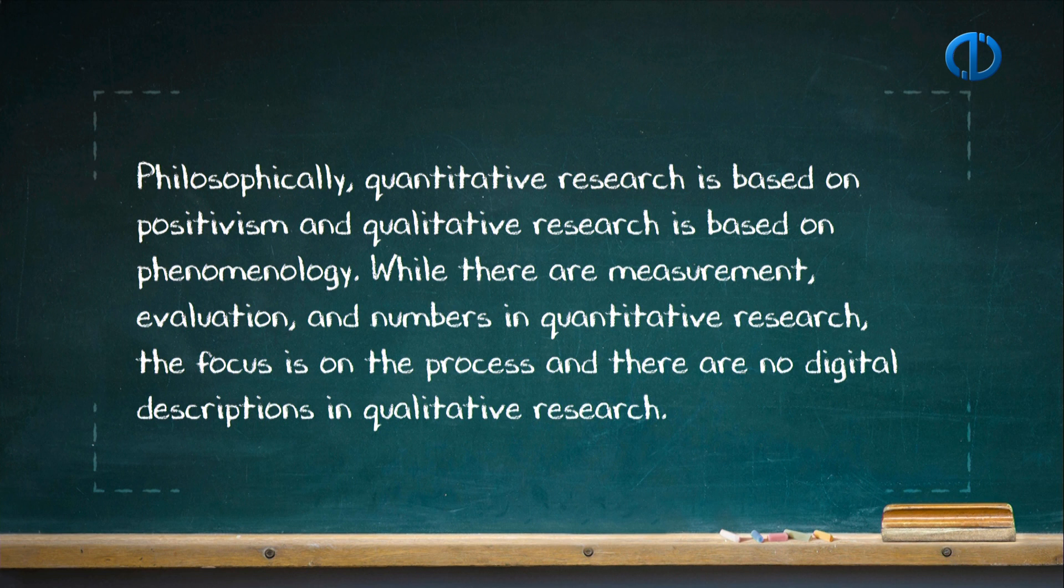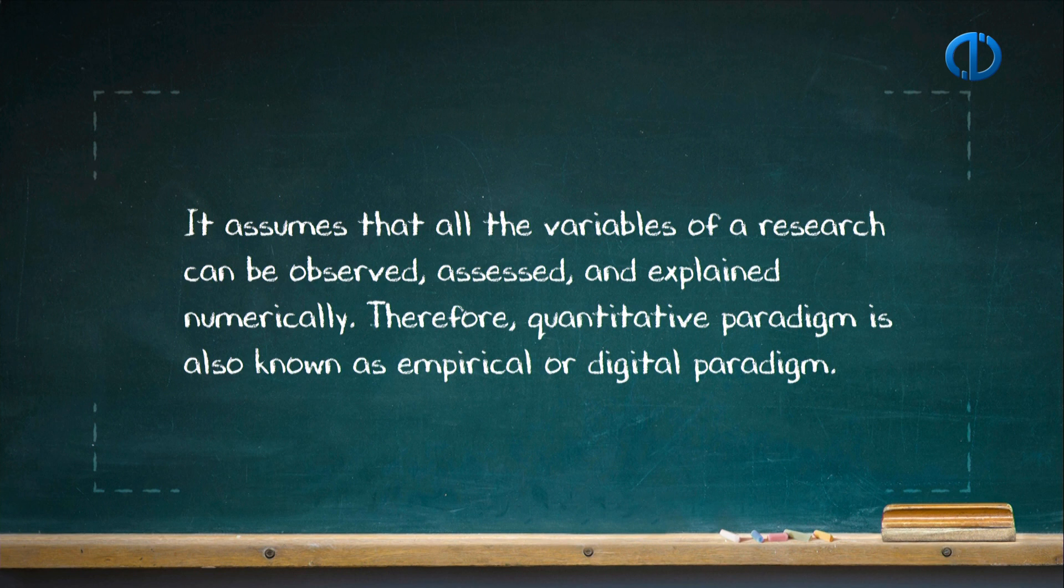Quantity is a notion used to specify the amount or number of something. In other words, the answer to the question how many or how much generally gives the quantity of that thing. Yet, quality involves the answer to how. In this sense, quantitative paradigm is based on numbers and statistical analysis in social sciences. It assumes that all the variables of research can be observed, assessed and explained numerically. Therefore, quantitative paradigm is also known as empirical or digital paradigm.